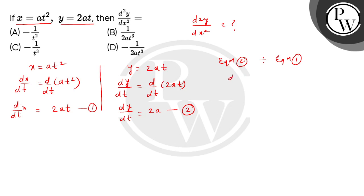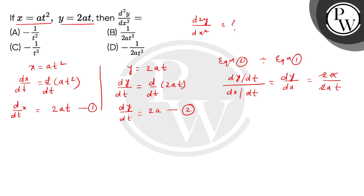अब बच्चों हम divide करेंगे equation number 2 को equation number 1 से. So यहां आएगा dy/dt whole divided by dx/dt, तो इससे हमें मिल जाएगा the derivative of y with respect to x. So this is equals to 2a divided by 2at — तो 2 and a cancel हो जाएंगे — and बच्चों, यहां से हमें dy/dx मिल जाएगा: 1 by t.